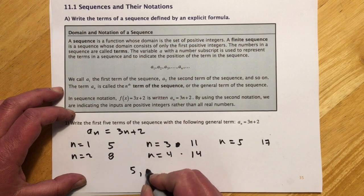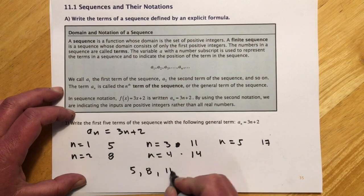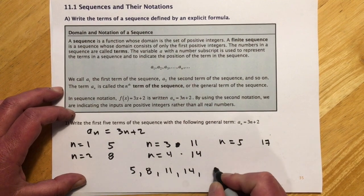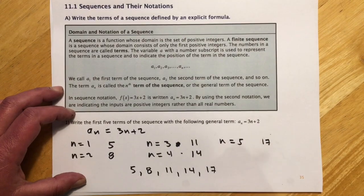So the first five terms would look like 5, 8, 11, 14, and 17.